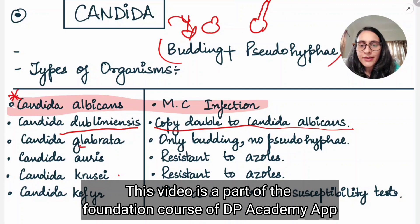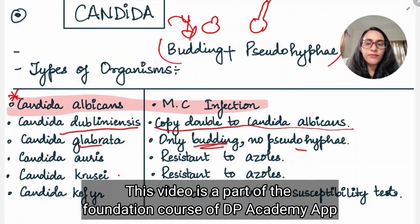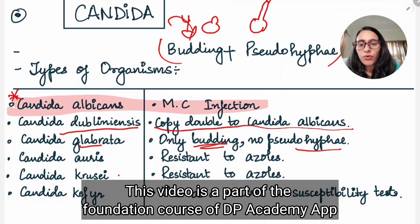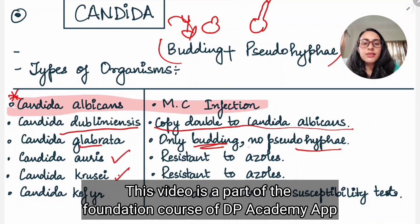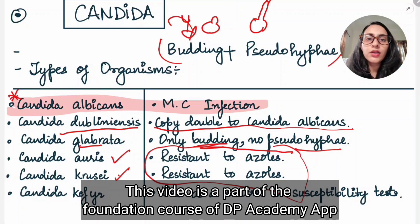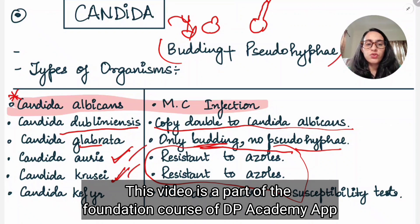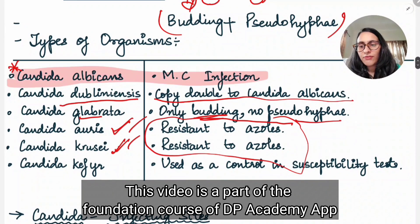Then we have Candida glabrata. Glabrata only shows budding and there is no pseudo hyphae in glabrata. Two important points related to Candida auris and Candida cruzi: both of these are resistant to azoles. We know that we give azoles for fungal infections, but both auris and cruzi are resistant to azoles, so there is no use giving azoles to them.